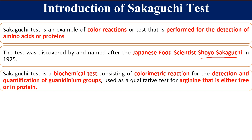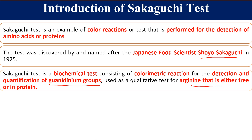This test is primarily a qualitative test for arginine, whether present alone or when arginine is present in a protein. Both free arginine and arginine in protein form can be detected. Actually, it is not strictly a test for arginine — it is a test for the presence of the guanidine group. Wherever the guanidine group is present, either in arginine or any other compound, it can be detected by this test.